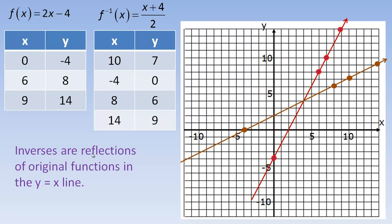Inverses are reflections of original functions in the y = x line, because to get the inverse we switch x and y. The y = x line contains all ordered pairs where x and y are the same, such as (0,0), (1,1), (2,2), (-6,-6) — it's the collection of all ordered pairs whose x and y coordinates are equal.